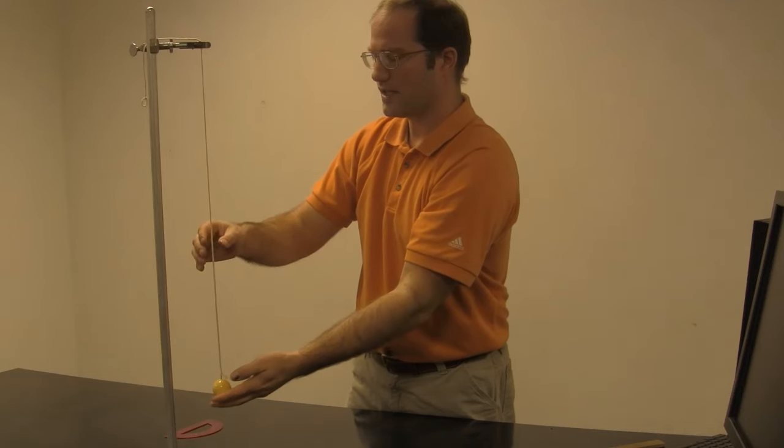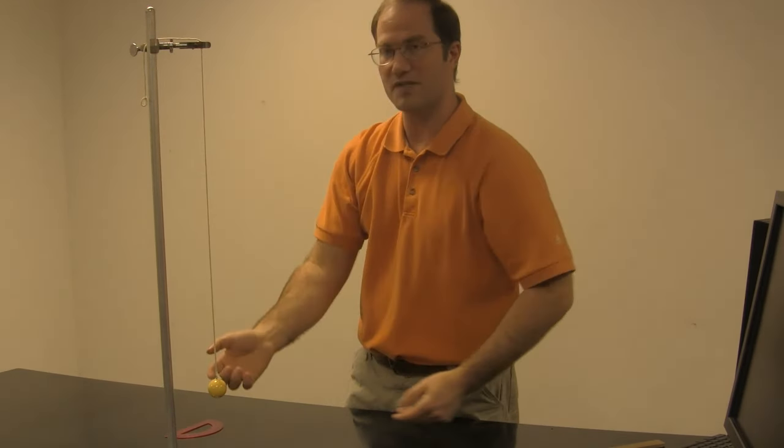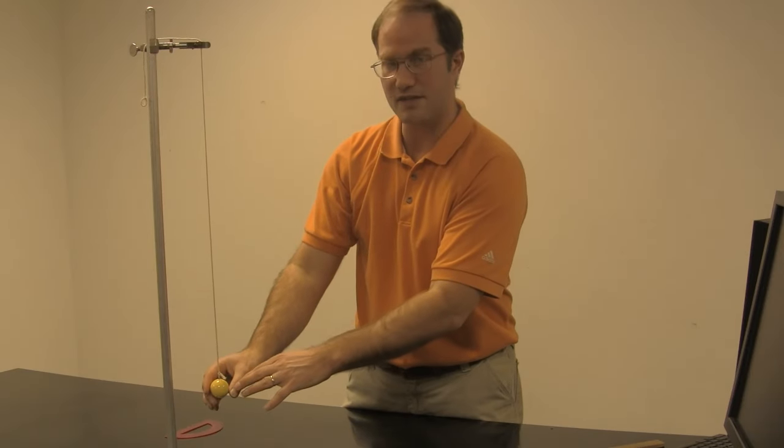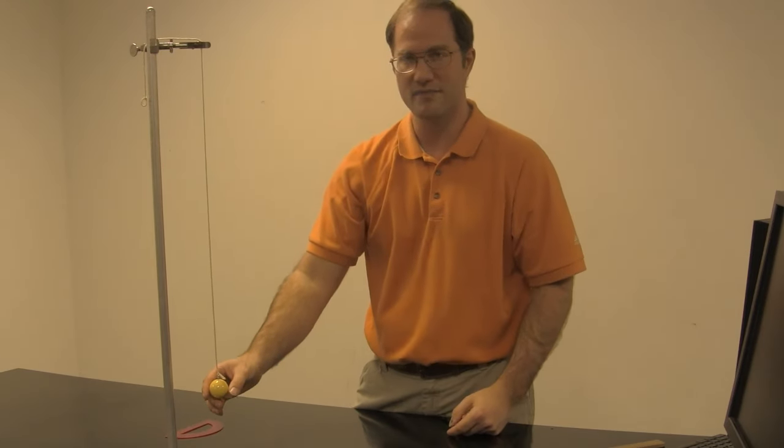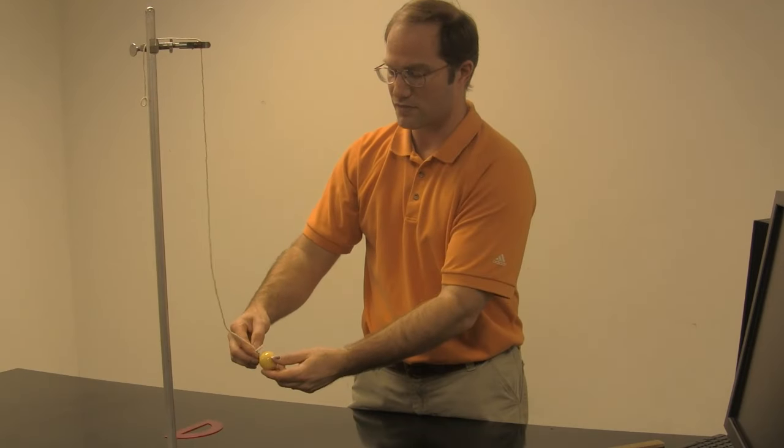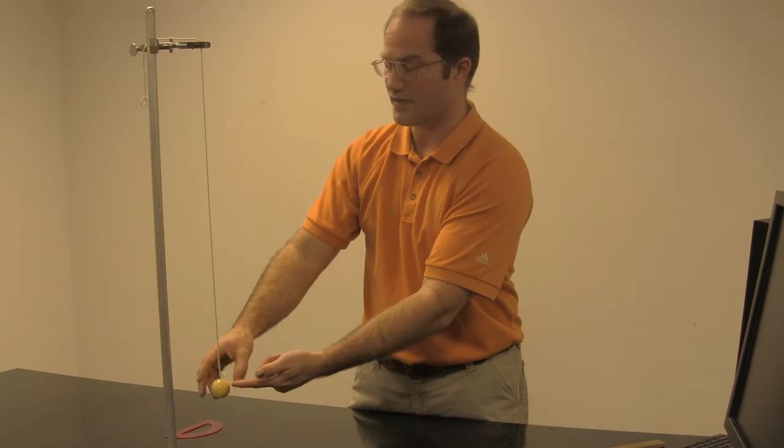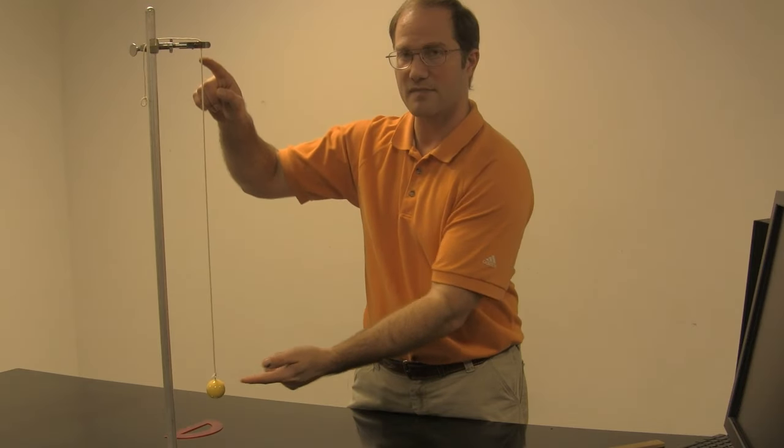The pendulum length is measured from the pivot point down to its center of mass, which is pretty much the center of this ball. Maybe a little higher due to the mass of the string and the screw. But the center of mass of the pendulum is pretty much the center of the ball. So that length is the length of the pendulum.